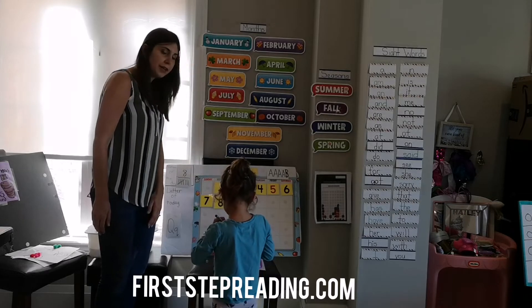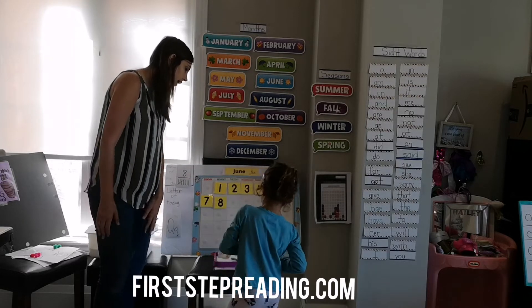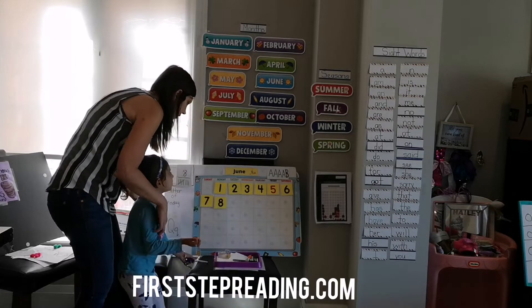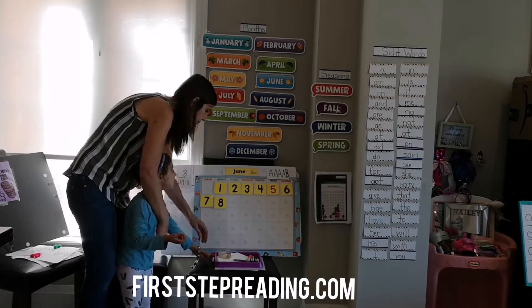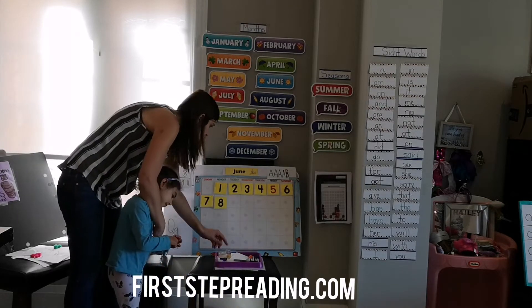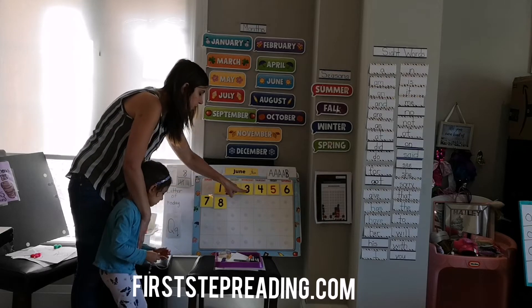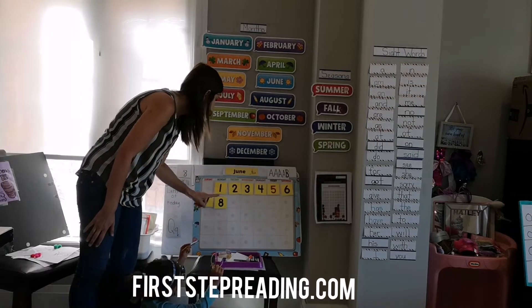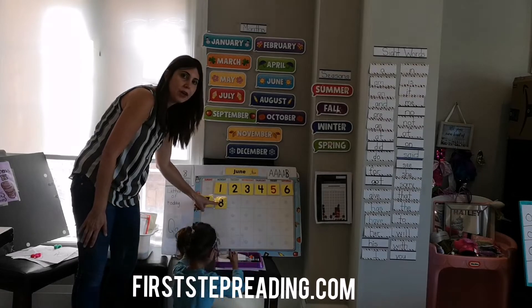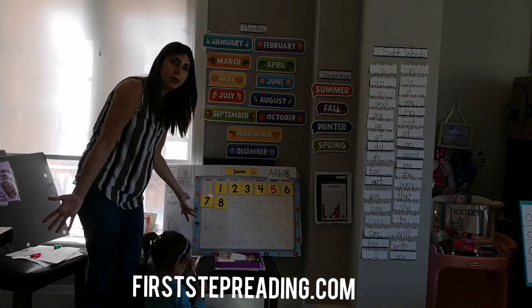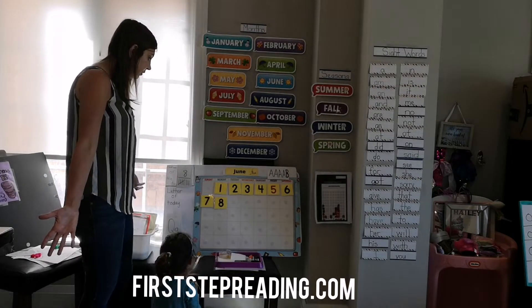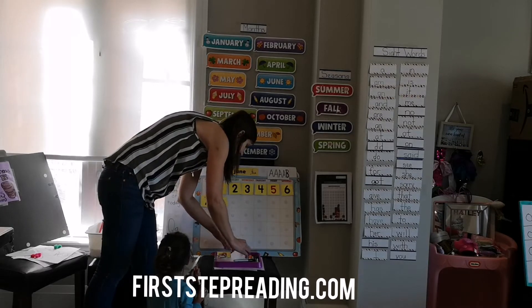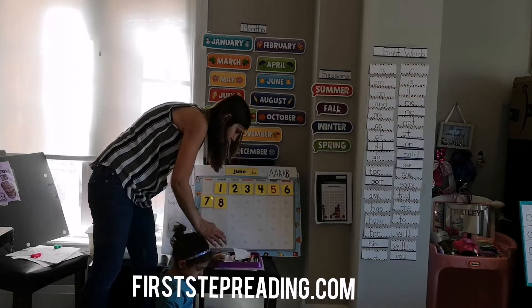Now we're going to figure out what day it is in June. Let's count together: one, two, three, four, five, six, seven, eight. What number comes after eight? Nine. I got a nine — let me go get it.